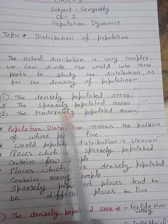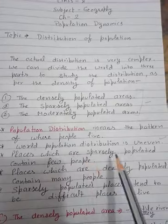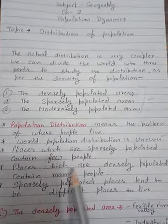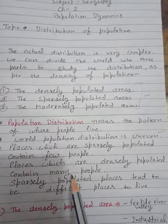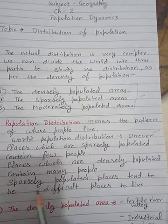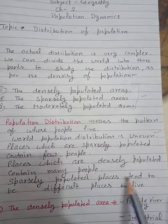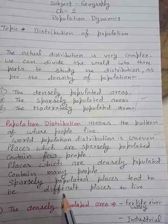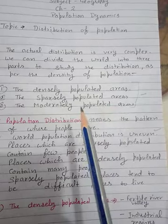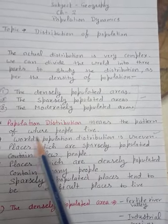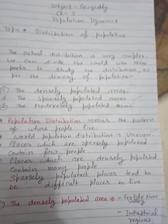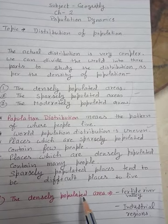That means where population is sparse, few people live there. Places which are densely populated contain many people. Sparsely populated places tend to be difficult places to live because the living conditions there are not suitable. So we start with the first point: densely populated areas.